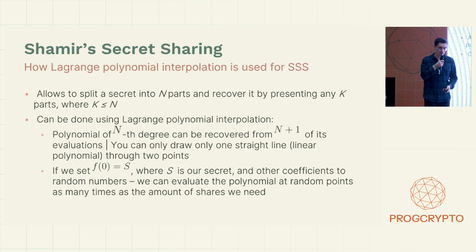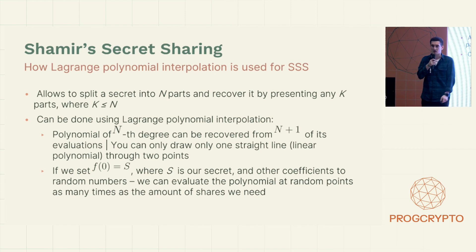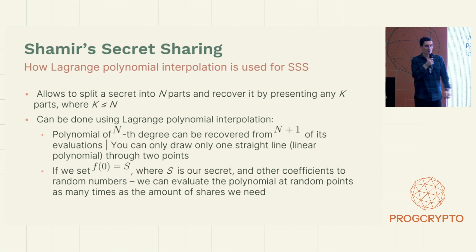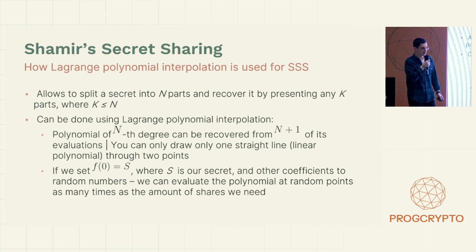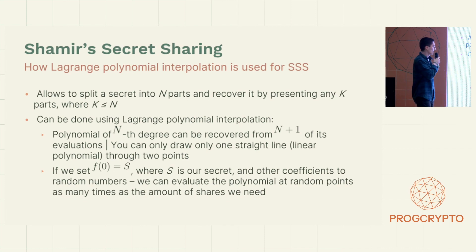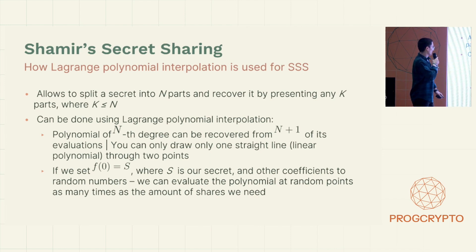Before I talk about RLN, I'm going to talk about Shamir secret sharing scheme because it is used in RLN. Shamir secret sharing scheme allows you to split a secret into N parts and recover it by presenting any K parts, where K is less than or equal to N. This can be done using Lagrange polynomial interpolation. A polynomial of Nth degree can be recovered from N plus one of its evaluations.